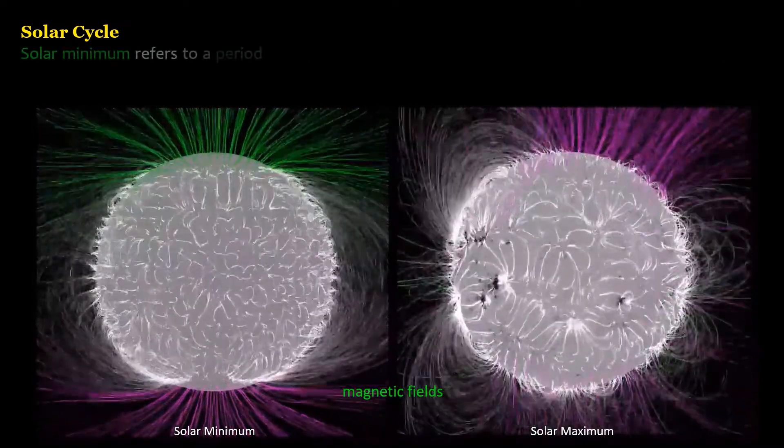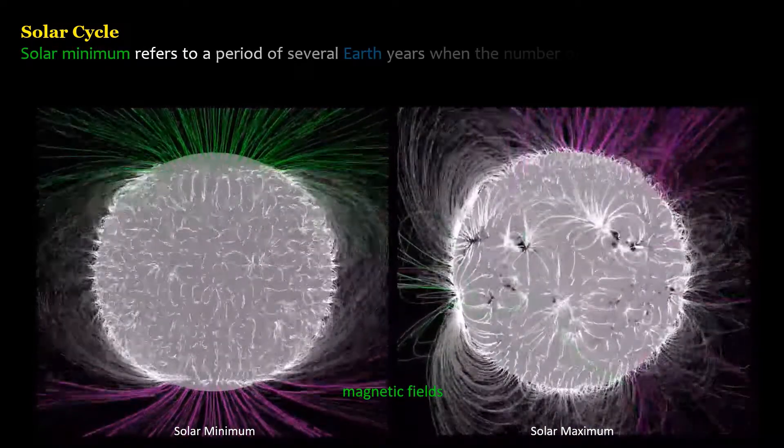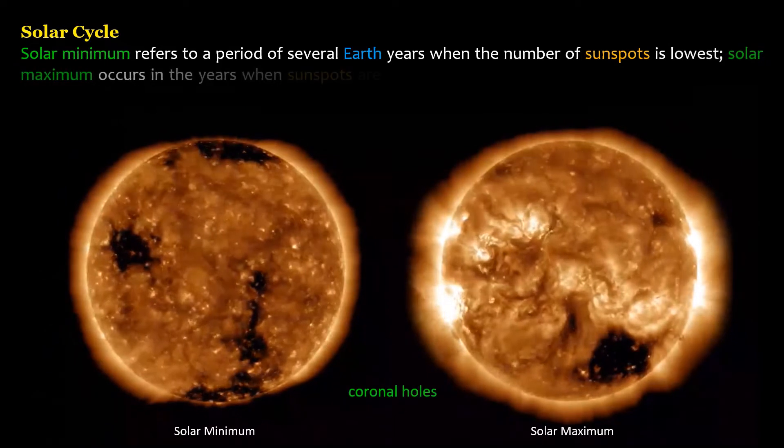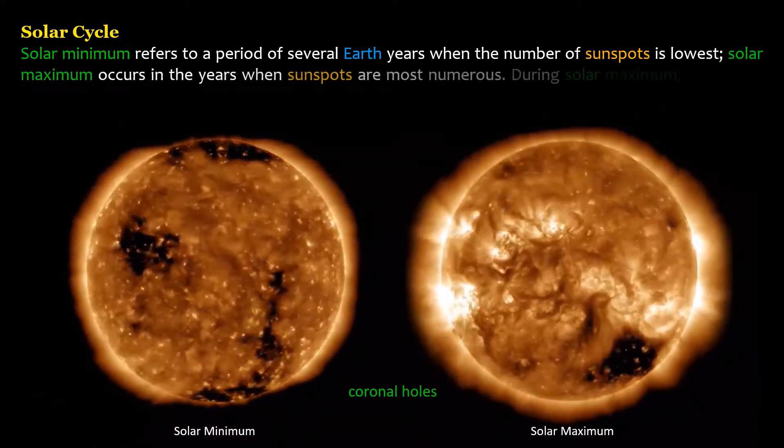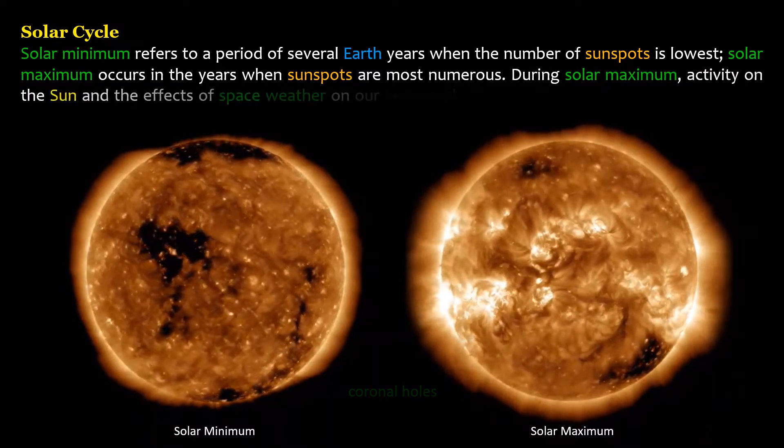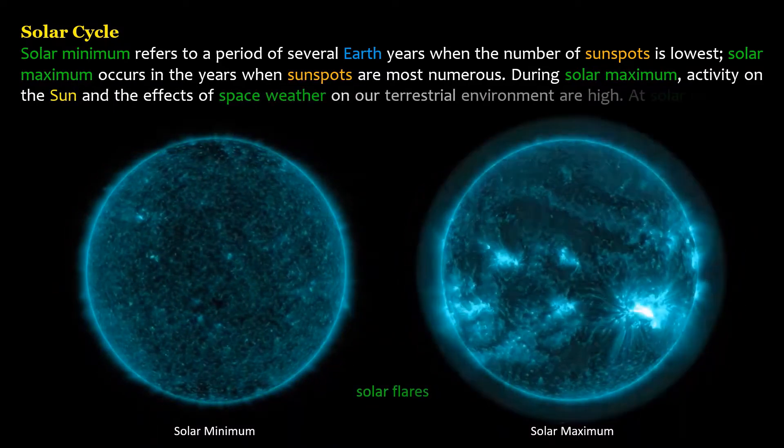Solar minimum refers to a period of several Earth years when the number of sunspots is lowest. Solar maximum occurs in the years when sunspots are most numerous. During solar maximum, activity on the sun and the effects of space weather on our terrestrial environment are high.